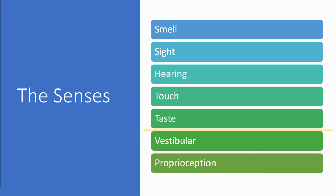Proprioception is your body's ability to sense its location, movements, and actions in relation to the environment and objects in the environment. It's essentially knowing where your joints, muscles, and all your body parts are in space at any time, without needing visual input. Examples of proprioceptive input include running, jumping, weight-bearing activities such as crawling and push-ups, pushing and pulling heavy objects, lifting heavy objects, cardiovascular activities, deep pressure, hugs and squeezes, and chewing.